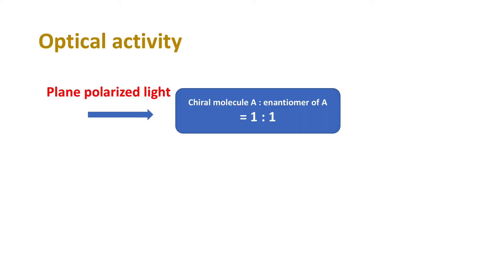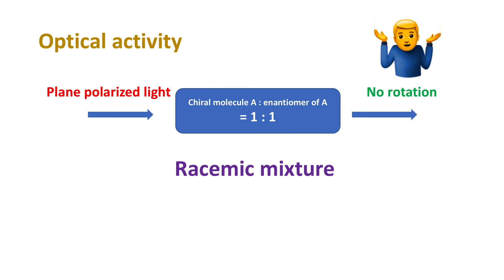What if sample contains equal amount of both enantiomers? Then, the rotation will be cancelled out, or we can say the net rotation equals to zero. In this case, the sample is called racemic mixture.